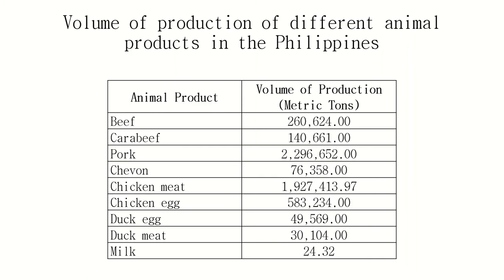The next table shows the volume of production of different animal products in metric tons as of 2019. This data is from the PSA or the Philippine Statistics Authority. This table shows that we really have a deficiency or shortage in the production of milk, beef, carabeef, and chevon.